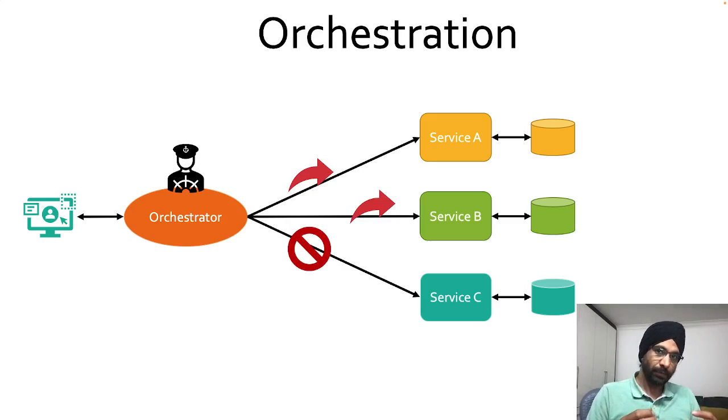So one of the primary requirements or the important requirement in services which are participating in this type of design is that your service should be able to take another request to roll back previous change. So this rollback can happen using some sort of unique UUID or some sort of identifier.